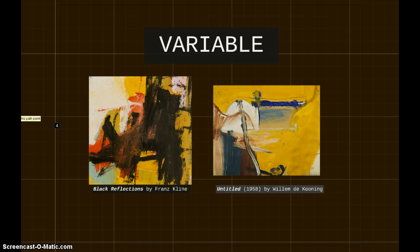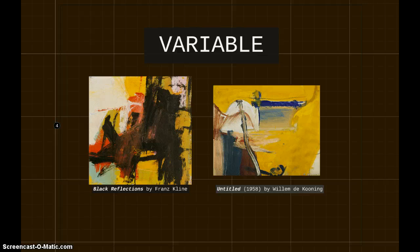According to Walton, variable features are those perceivable features in a work that have no bearing on whether a piece is perceived as belonging to that category. For example, things like shape and color do not typically point to one category or another. As Walton states, the possession or lack of the feature is irrelevant as to whether the work qualifies for the category. In looking at Jackson Pollock's Autumn Rhythm, we can examine the variable features of color, shape, and texture. The color scheme is muted and neutral, while there are no recognizable shapes beyond the rectangular canvas. While Pollock was able to create some actual texture in this piece with the layering of paint, none of these factors have an effect on whether or not this piece belongs to the category of abstract expressionism.